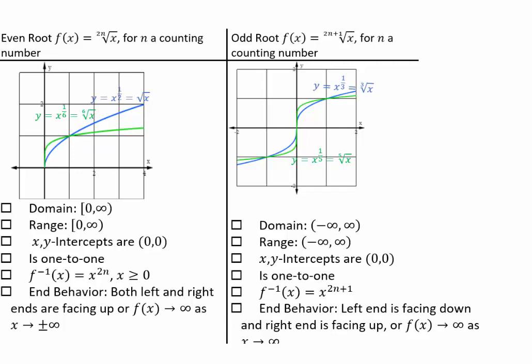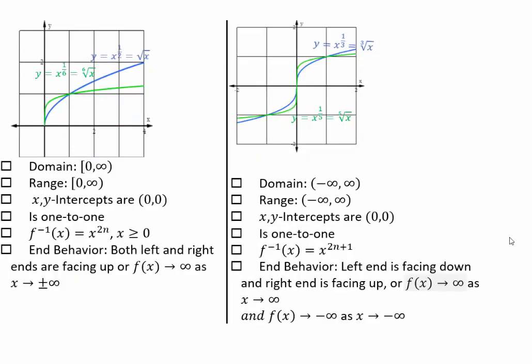Intercepts are the same, 0, 0 for both. They're both 1 to 1 functions. And to undo roots, you have to take power. So x to power 2n and x to power 2n plus 1 are the inverses respectively. And the end behavior we already saw when we were graphing even and odd power functions prior to now.